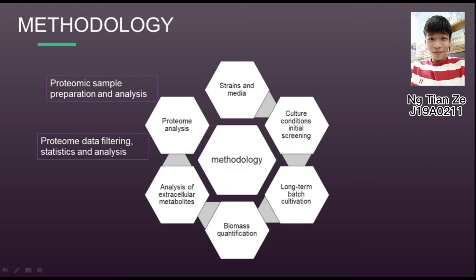Biomass was quantified by measuring cell dry weight concentrations. Weighed samples were passed through pre-weighed membrane filters with a pore size of 0.2 micrometers using a vacuum filtration unit. The filter was dried and weighed to determine the cell dry weight concentration in culture. Additionally, extracellular metabolites — lactate, acetate, and propionate — were quantified by high-performance liquid chromatography (HPLC).